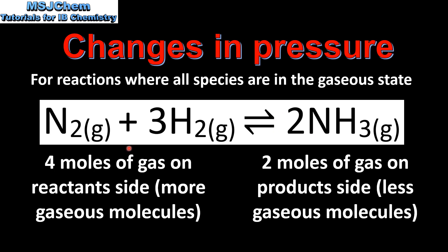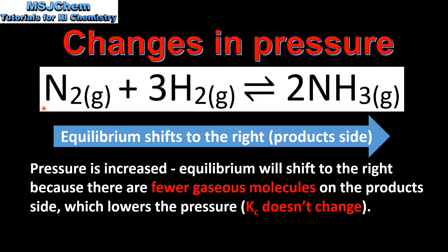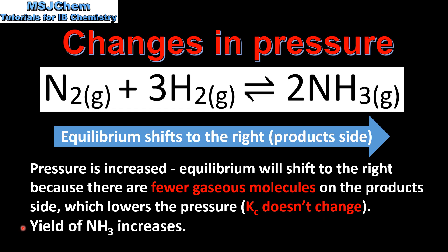On the reactant side we have more gaseous molecules, and on the product side we have fewer. When pressure is increased, the equilibrium shifts to the right because there are fewer gaseous molecules on the product side, which lowers the pressure of the system. Changing the pressure does not change the value of Kc, and the yield of ammonia will increase.